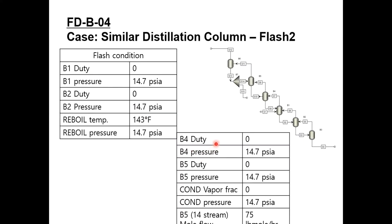We have been given that the duty of B4, just like B1, B2, and B3, will be zero. Similarly for B5, duty is zero. However for B6, which is our condenser, we must specify the type of product we want. If we want complete liquid, vapor fraction will be zero. If we want complete vapor, vapor fraction will be one. If we want a two-phase mixture, vapor fraction will be between zero and one.